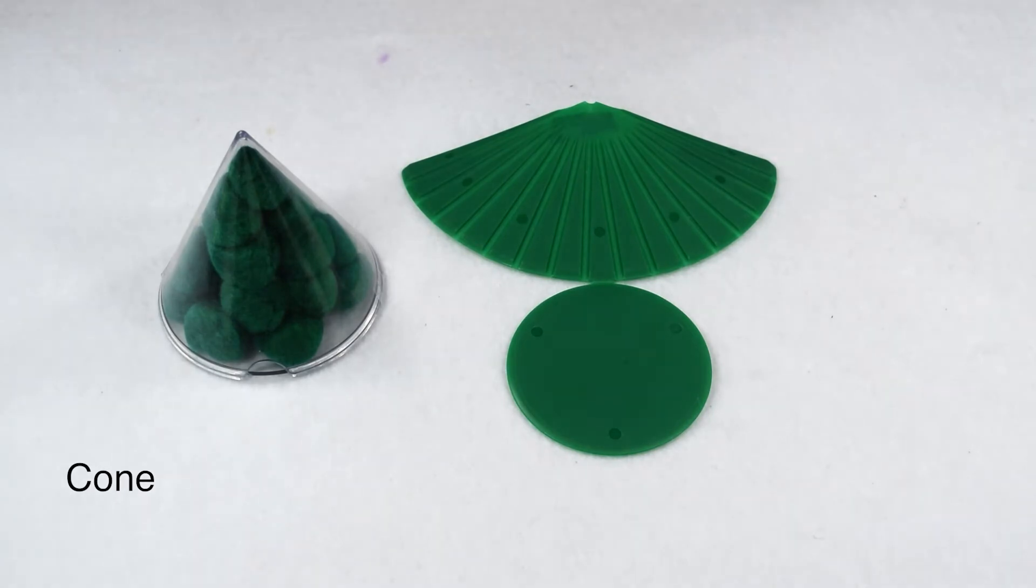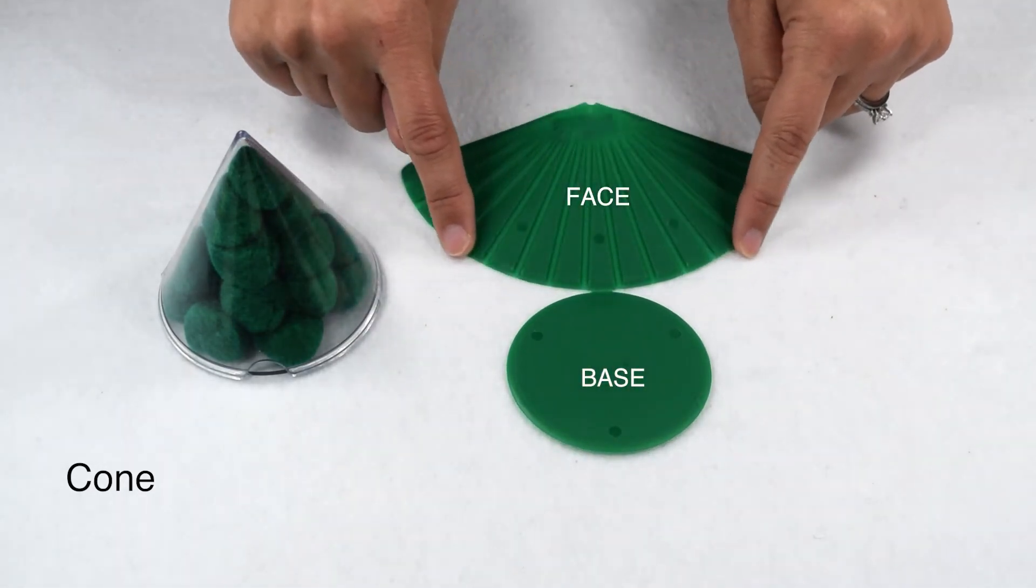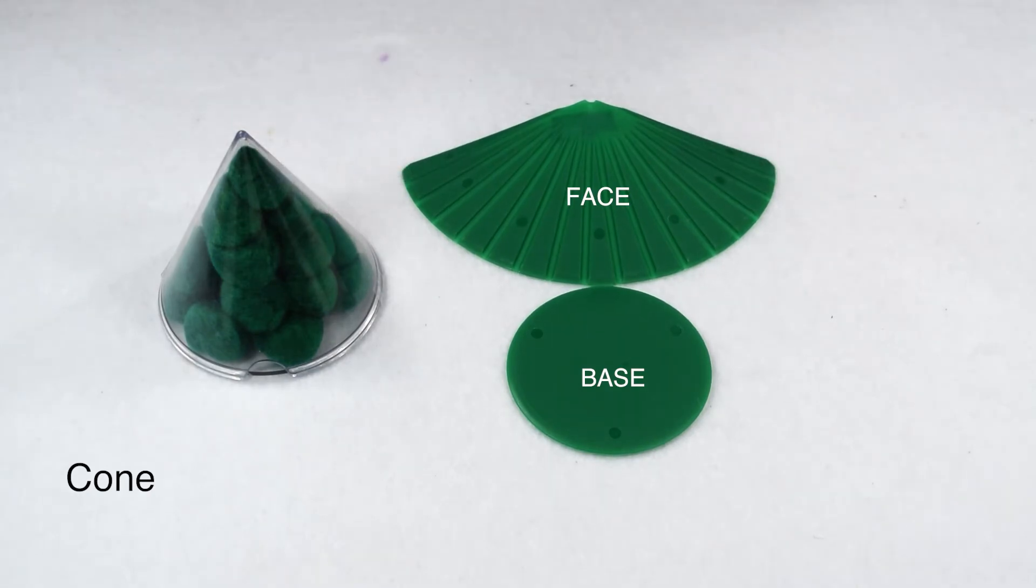When we take our cone and flatten it into a net, we can see our one circular base, and then along our lateral face, we can see the curved edge where it joins with the base.